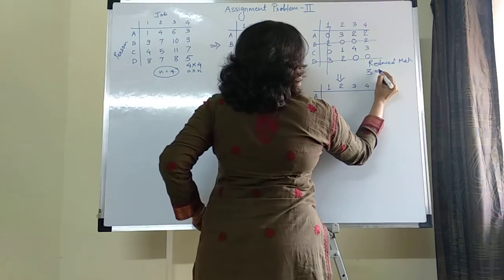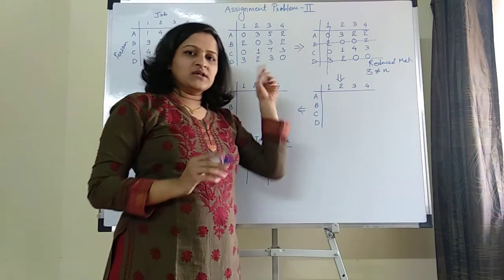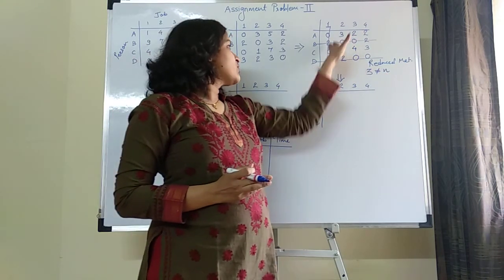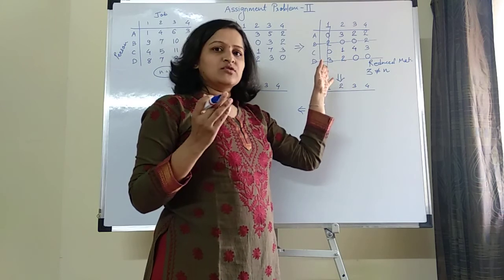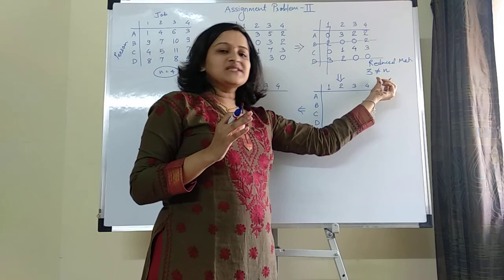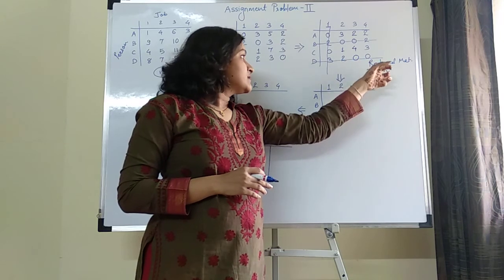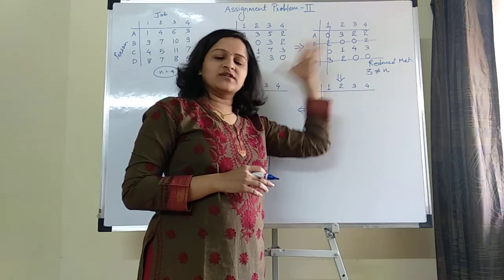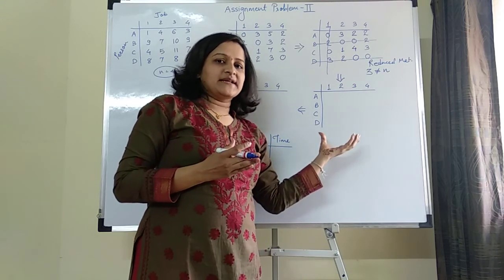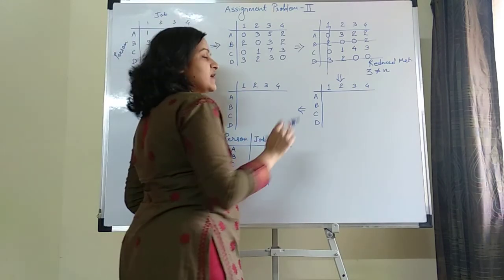This 3 is not equal to N, where N is 4 — the number of rows or columns. Since the number of lines required to cover all zeros is not equal to N, we have not yet found the solution. In part 1 they were equal, so we found the solution immediately. But this next step will be new in this part — pay attention to what to do next.